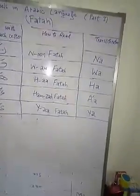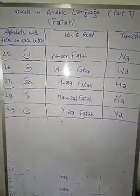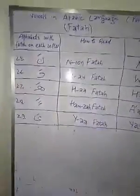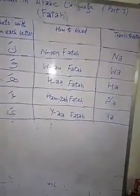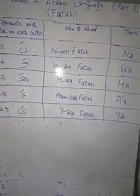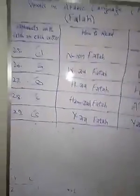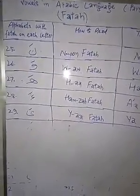I hope you got it and you will do the practice by your own as well. Inshallah, the next class will be about the combination of alphabets — two Arabic alphabets combined with Fatah, then three combined alphabets with Fatah. After that, we will start our second short vowel, which is Kasra. Inshallah, see you then.